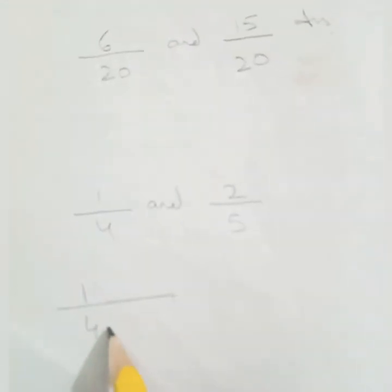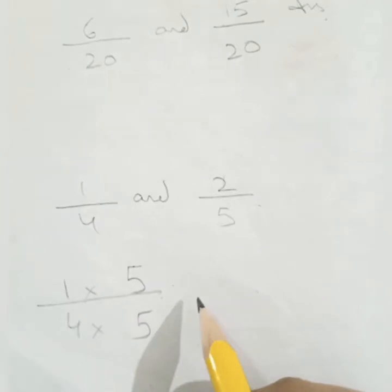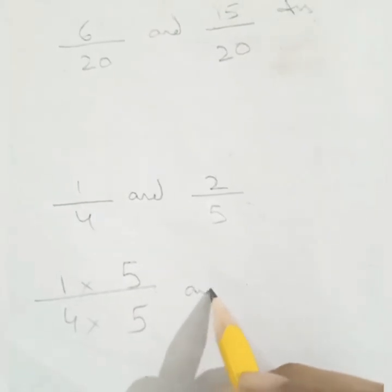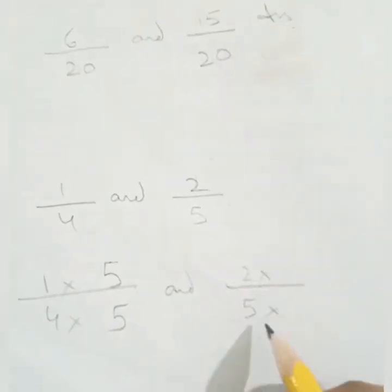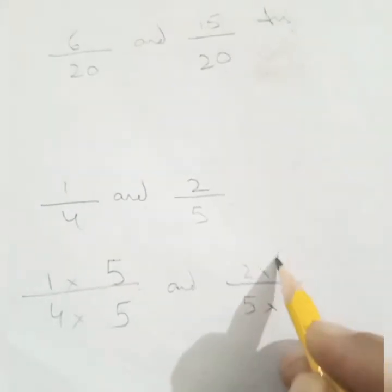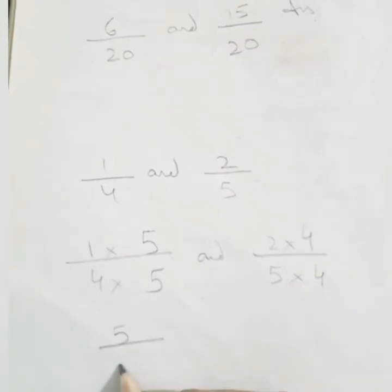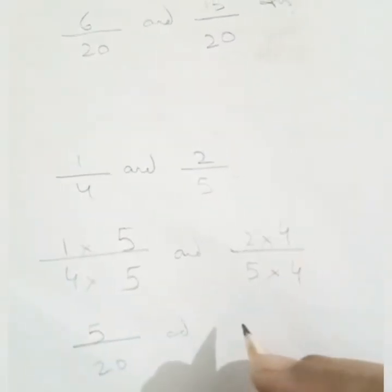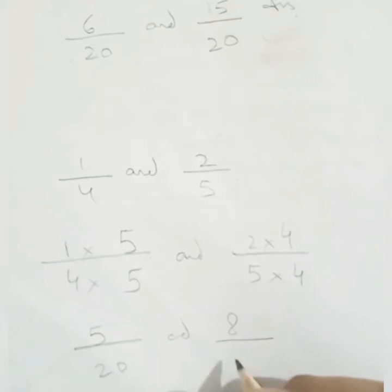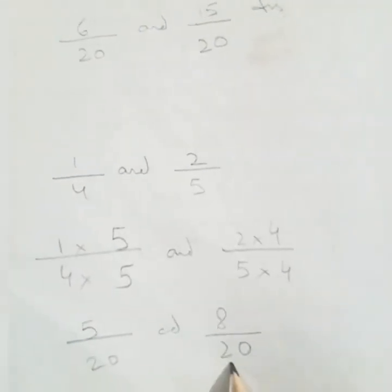One upon four will be multiplied by five to make it twenty, because four fives are twenty. Two upon five will be multiplied by four to make it twenty, because five fours are twenty. So one times five is five upon twenty, and two times four is eight upon twenty. We have five upon twenty and eight upon twenty — the denominator is common. This is our answer.